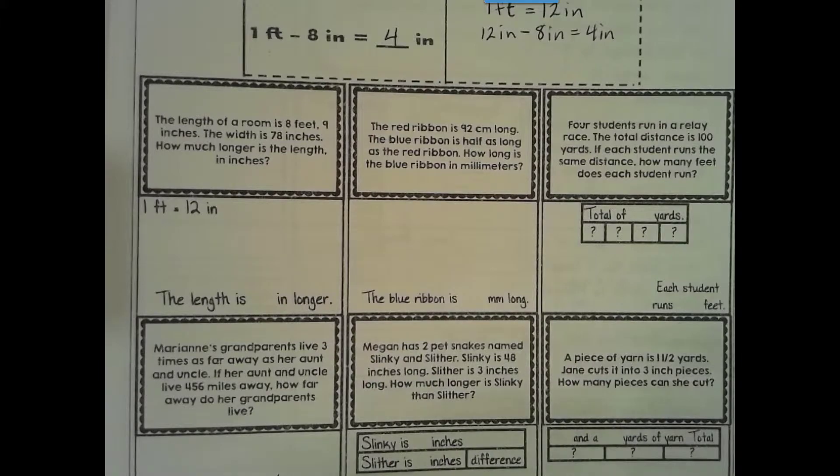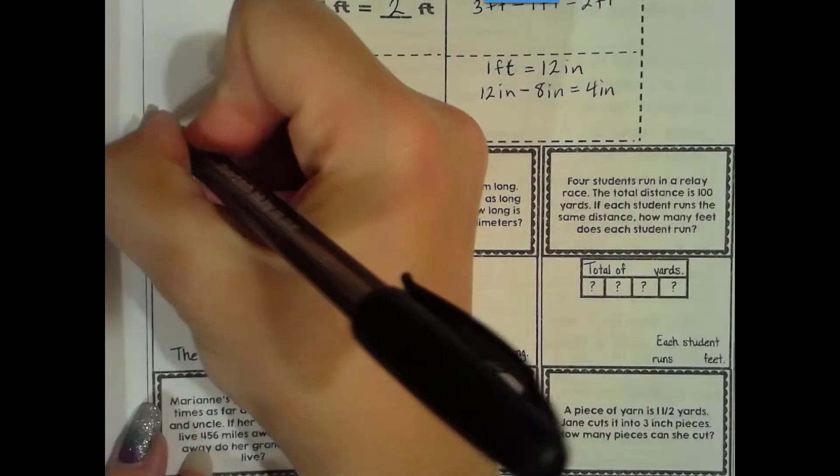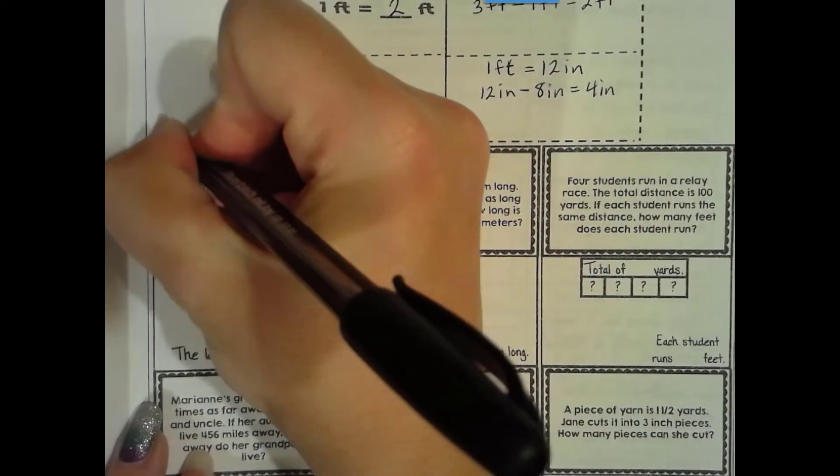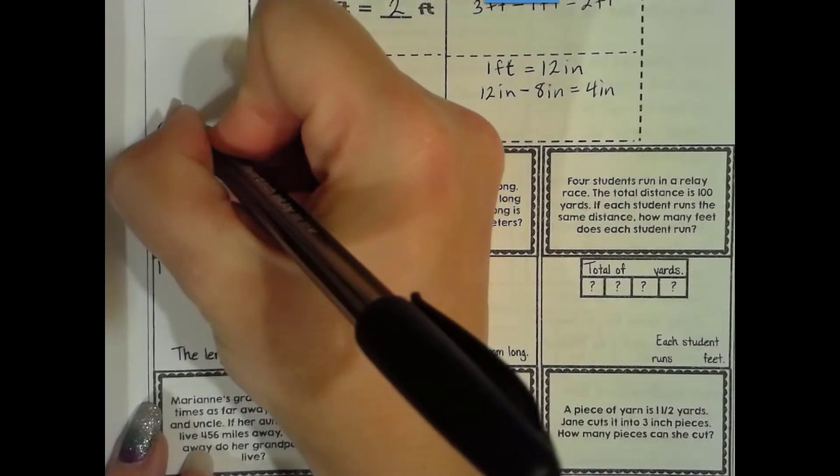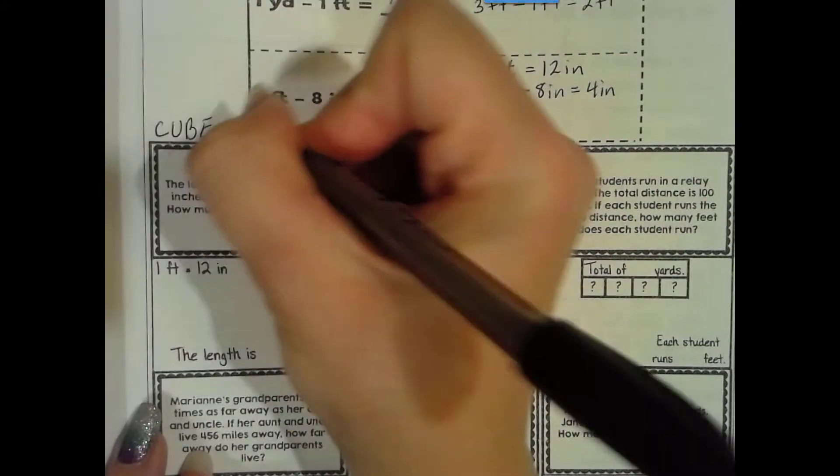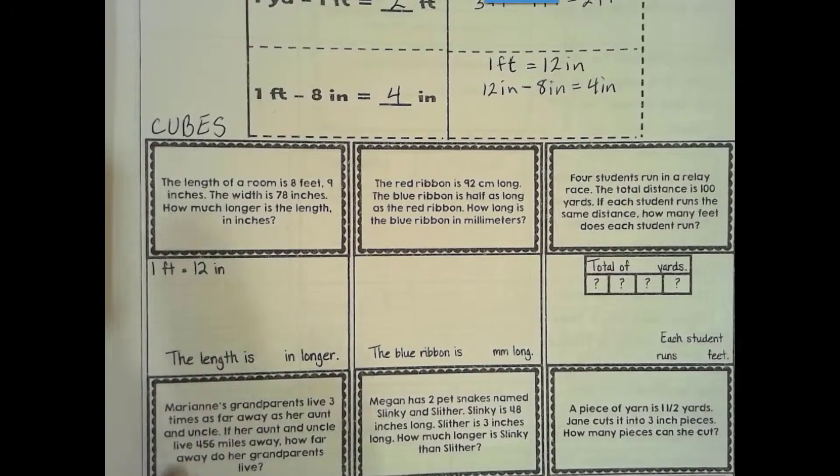Alright, so we're going to be using our CUBES. Circle our numbers. Underline our question, box keywords. Eliminate unnecessary information. And solve. That's our way of annotating our word problems.